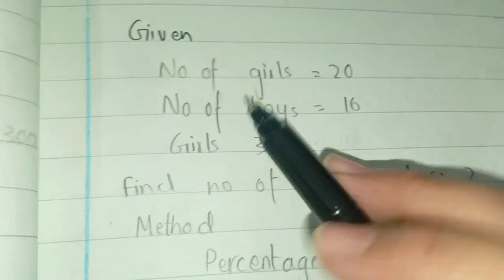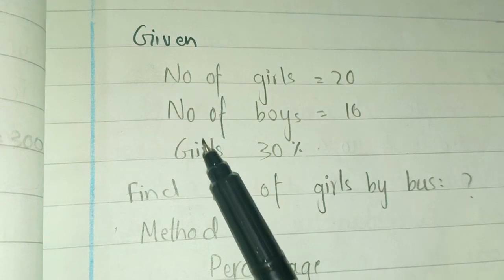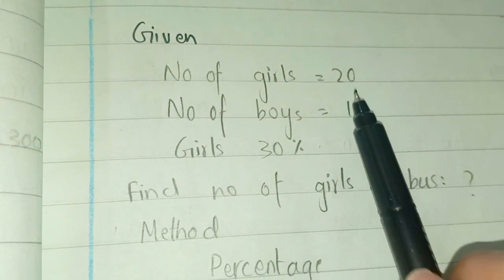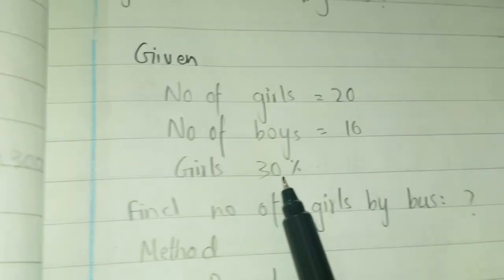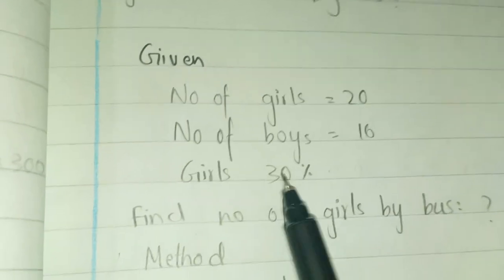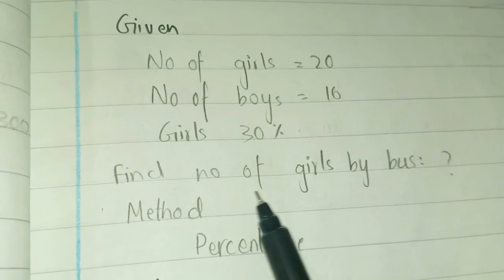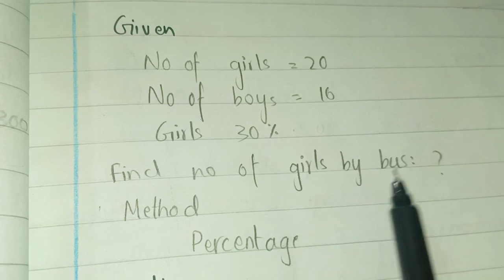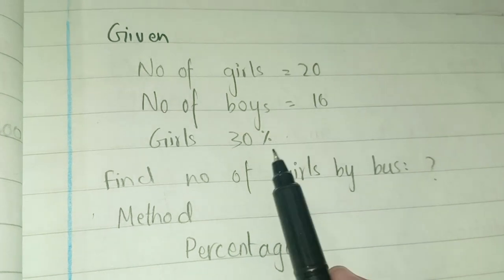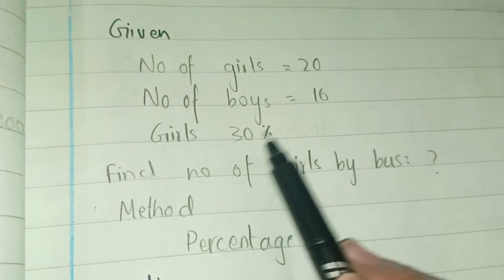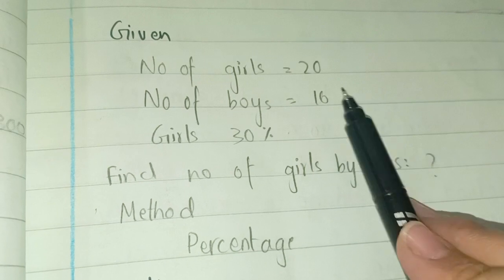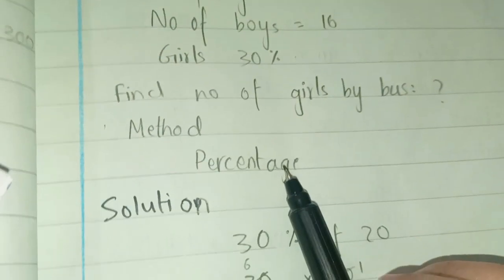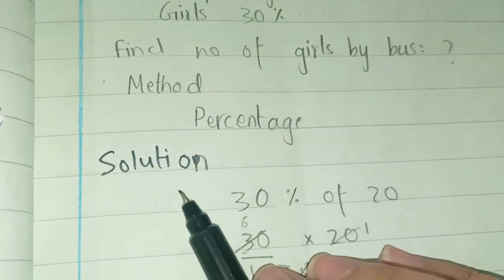Given: number of girls is 20, number of boys is 16, and 30% of girls go by bus. We have to find the number of girls who go by bus. We need to convert 30% into numbers from 20. The method we use is the percentage solution.